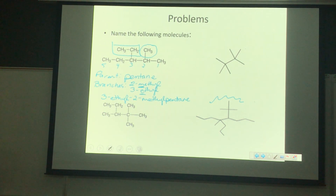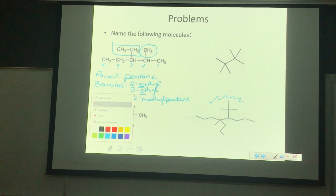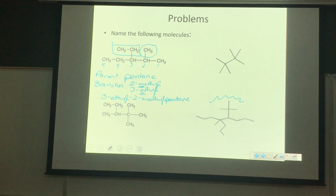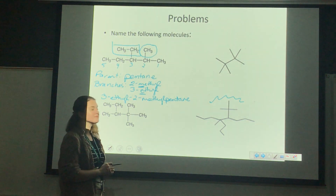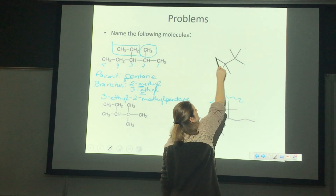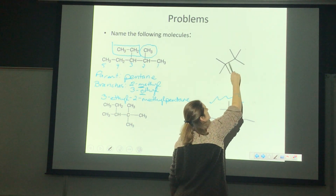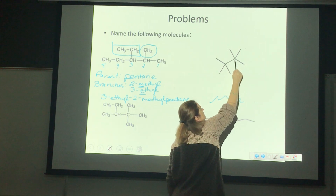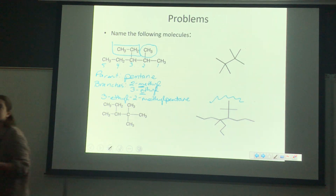We see that we've got a lot of pentanes — a lot of possibilities for our parent chain. IUPAC says that if you have a lot of possibilities, you're going to choose the one that has the most branches. If we did one chain right here, we'd have just one branch — that would be an isopropyl branch. But if we do this chain right here, we'd have two branches: a methyl and an ethyl.